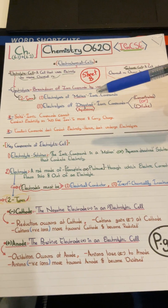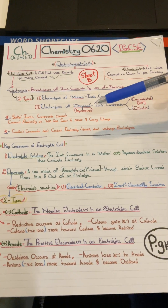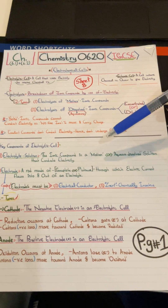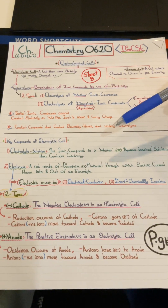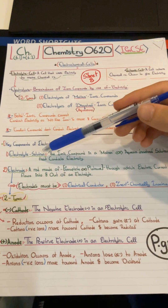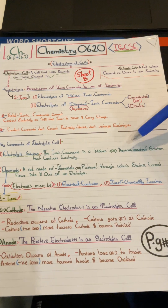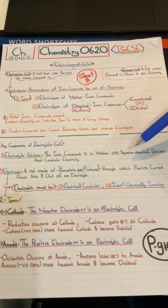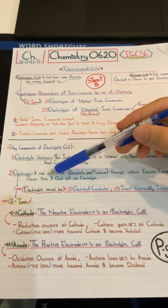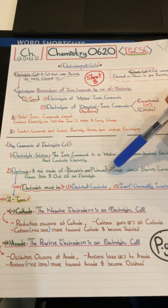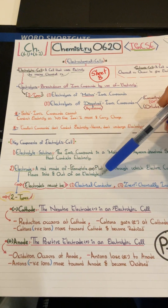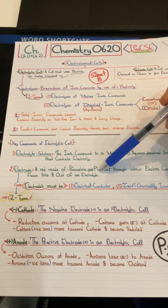The first component is the electrolytic solution — the ionic compound in a molten or aqueous dissolved form that conducts electricity. The products of electrolysis differ depending on whether the solution is molten or aqueous dissolved, and whether it's concentrated or dilute. An electrode is a rod made of graphite or platinum through which electric current flows into and out of the electrolyte.